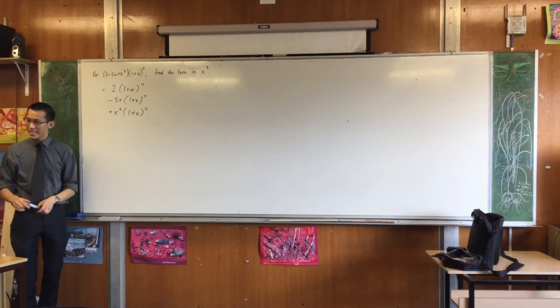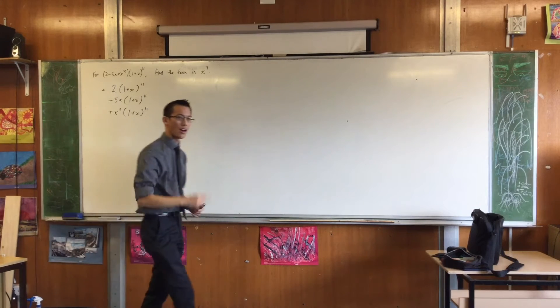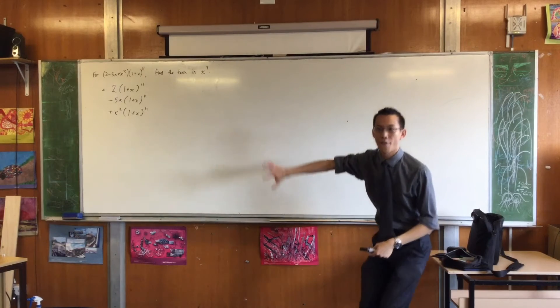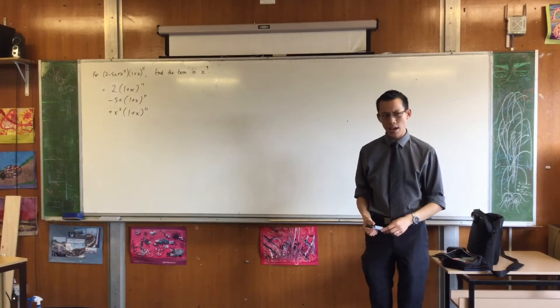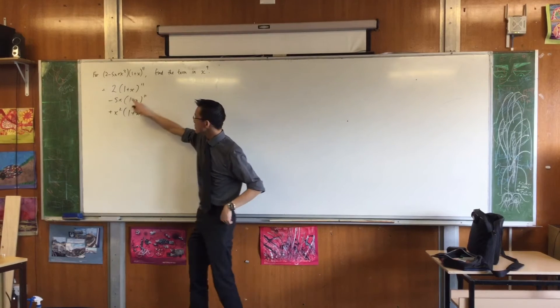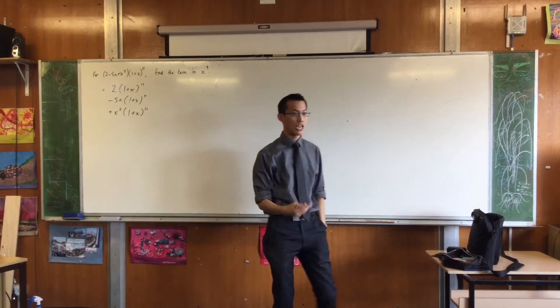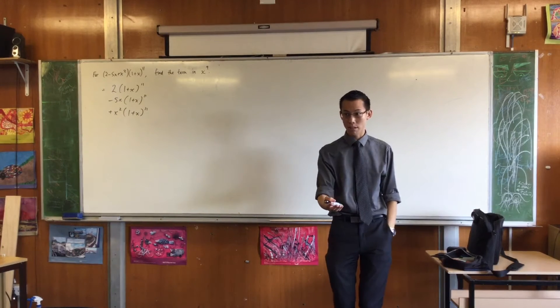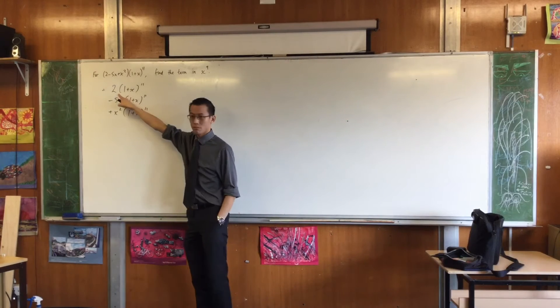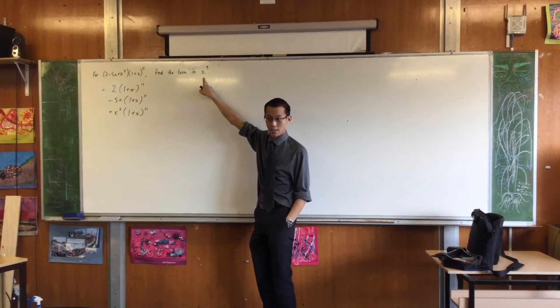Now, you can see that out of each of these rows, there will be exactly one term that contributes to the x to the 9 in the final line. Do you see that? Follow with me, right? Have a look at this first line, for instance. If you forget about the 2 for a minute, in here, there will be exactly one term which has an x to the 9 in it. Do you agree? That term gets multiplied by 2, and eventually it mixes together with these other guys, and that will be part of the x to the 9 term.